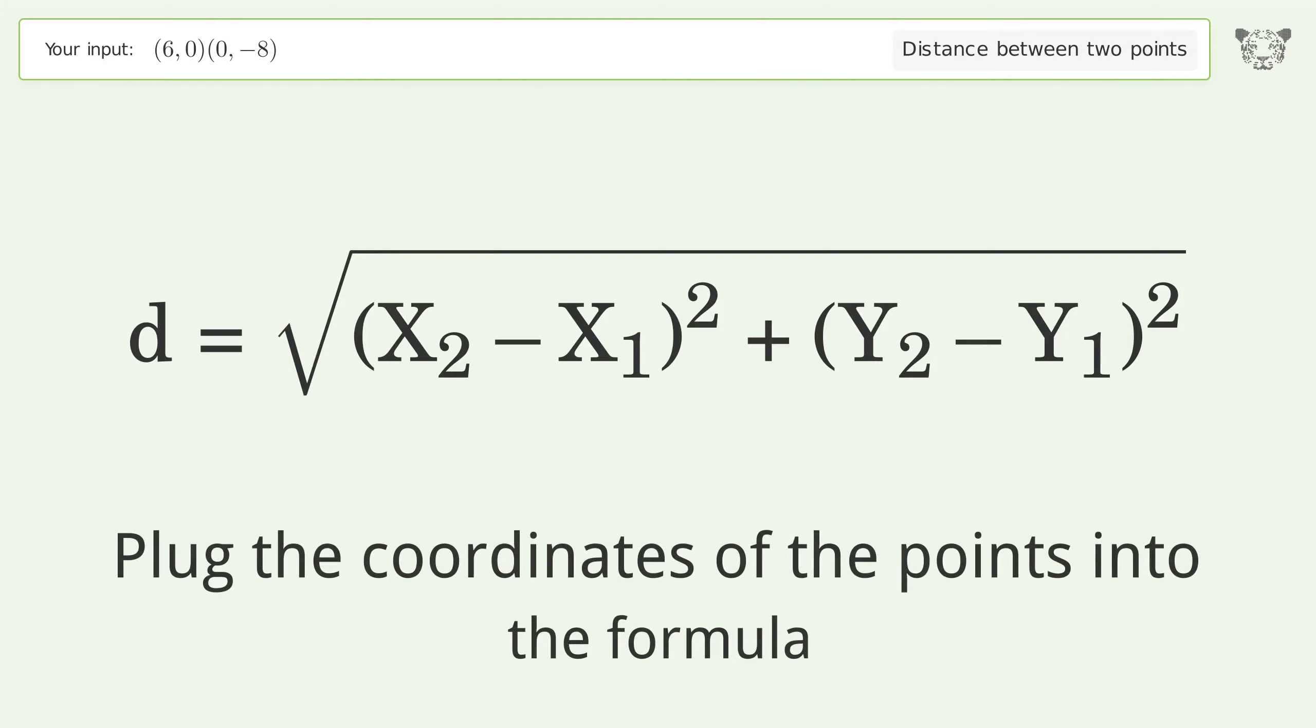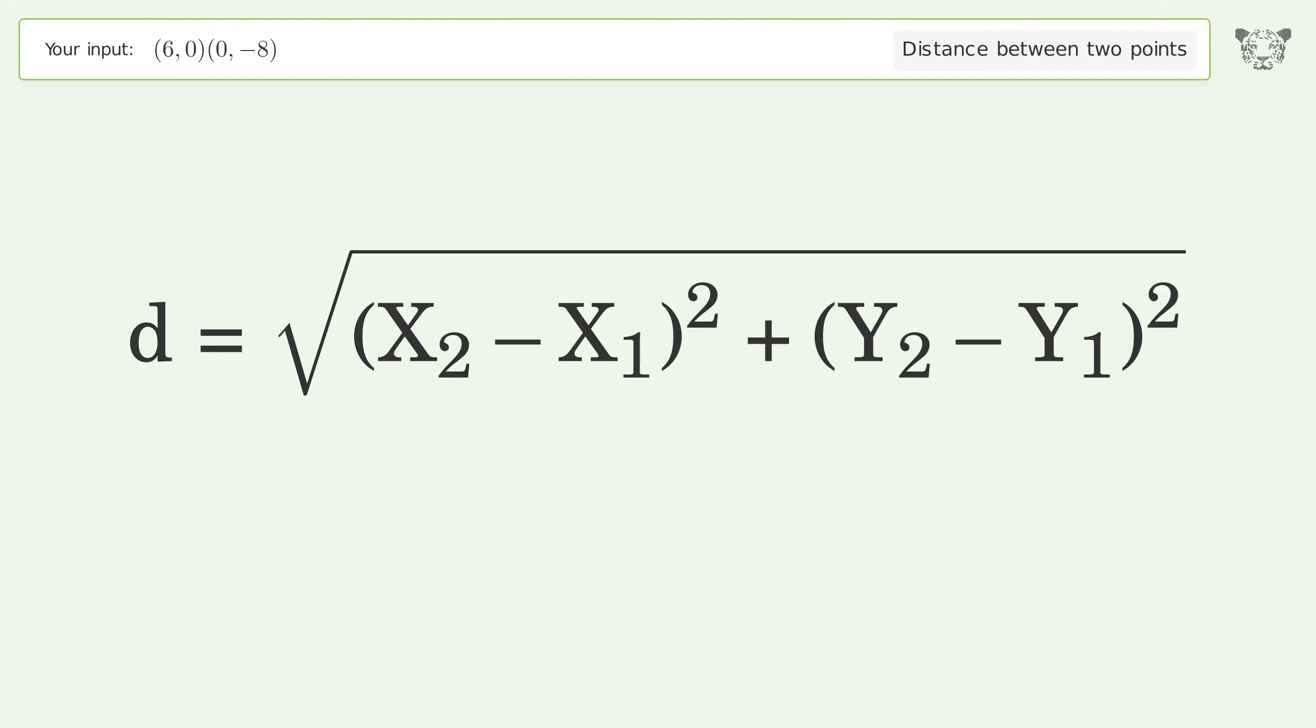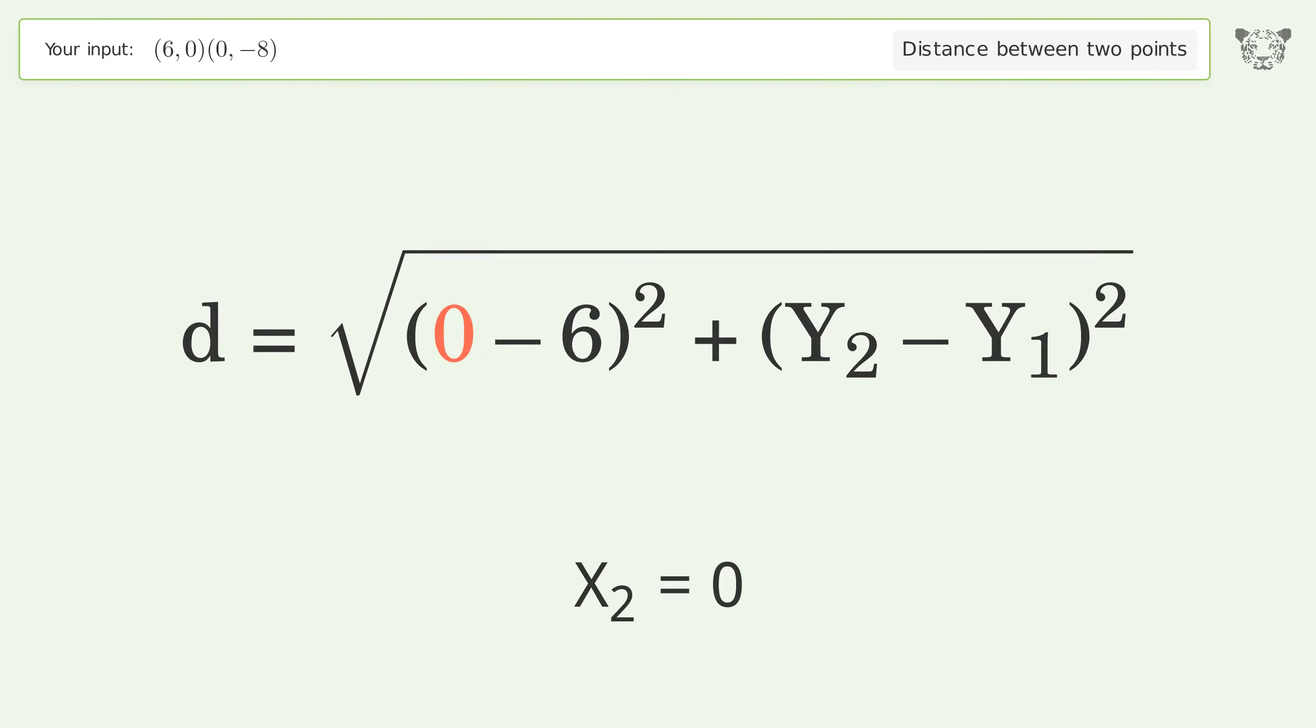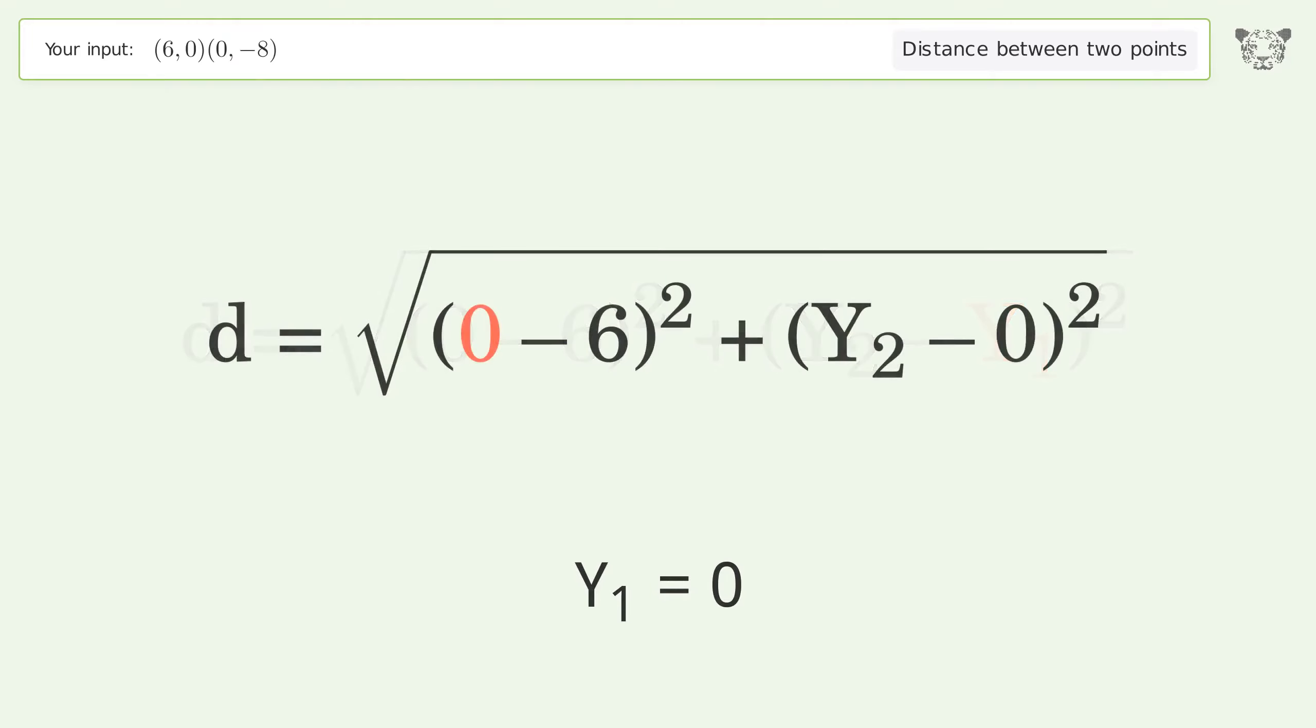Plug the coordinates of the points into the formula: x1 equals 6, x2 equals 0, y1 equals 0, y2 equals negative 8.